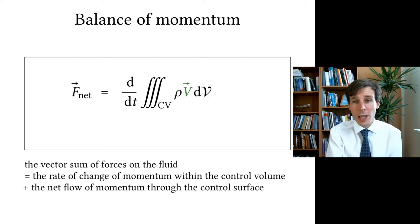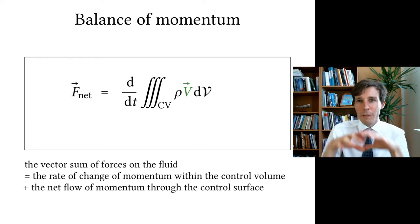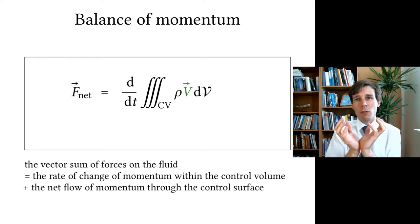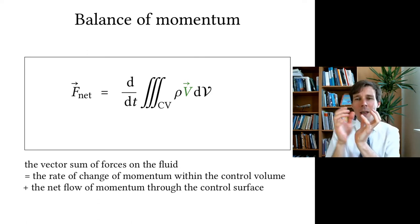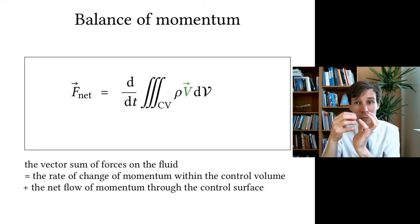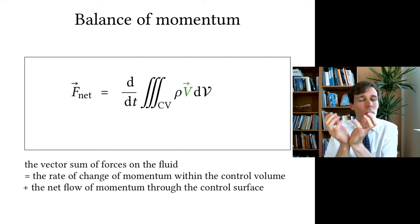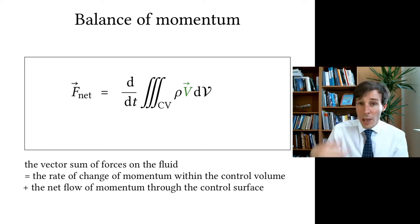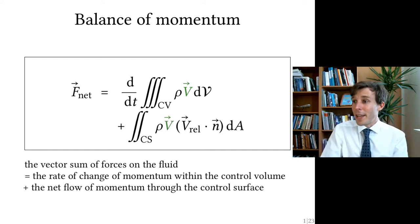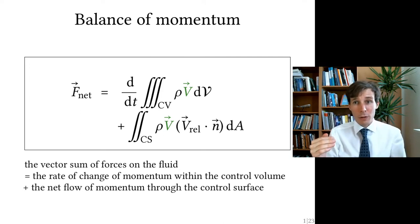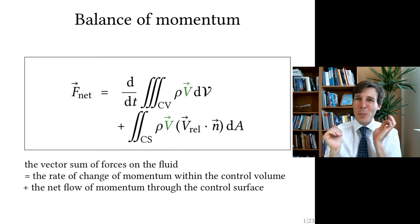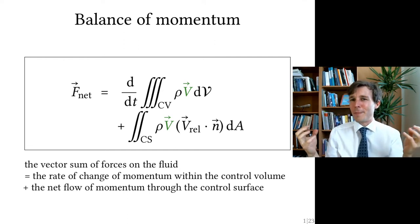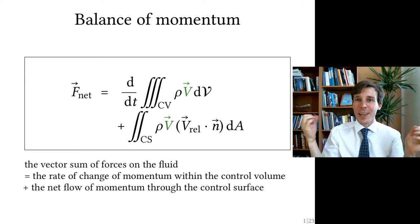The first part is the change in time of the momentum inside the control volume — this is the sloshing back and forth. If you have a control volume with no inlet and no outlet, but the fluid inside is going back and forth and that distribution is changing with time, this will result in a net force on the fluid. To this we add the net flow of momentum through the boundaries of the control volume — the total sum, negative in and positive out, of all the flows carrying momentum into the control volume.